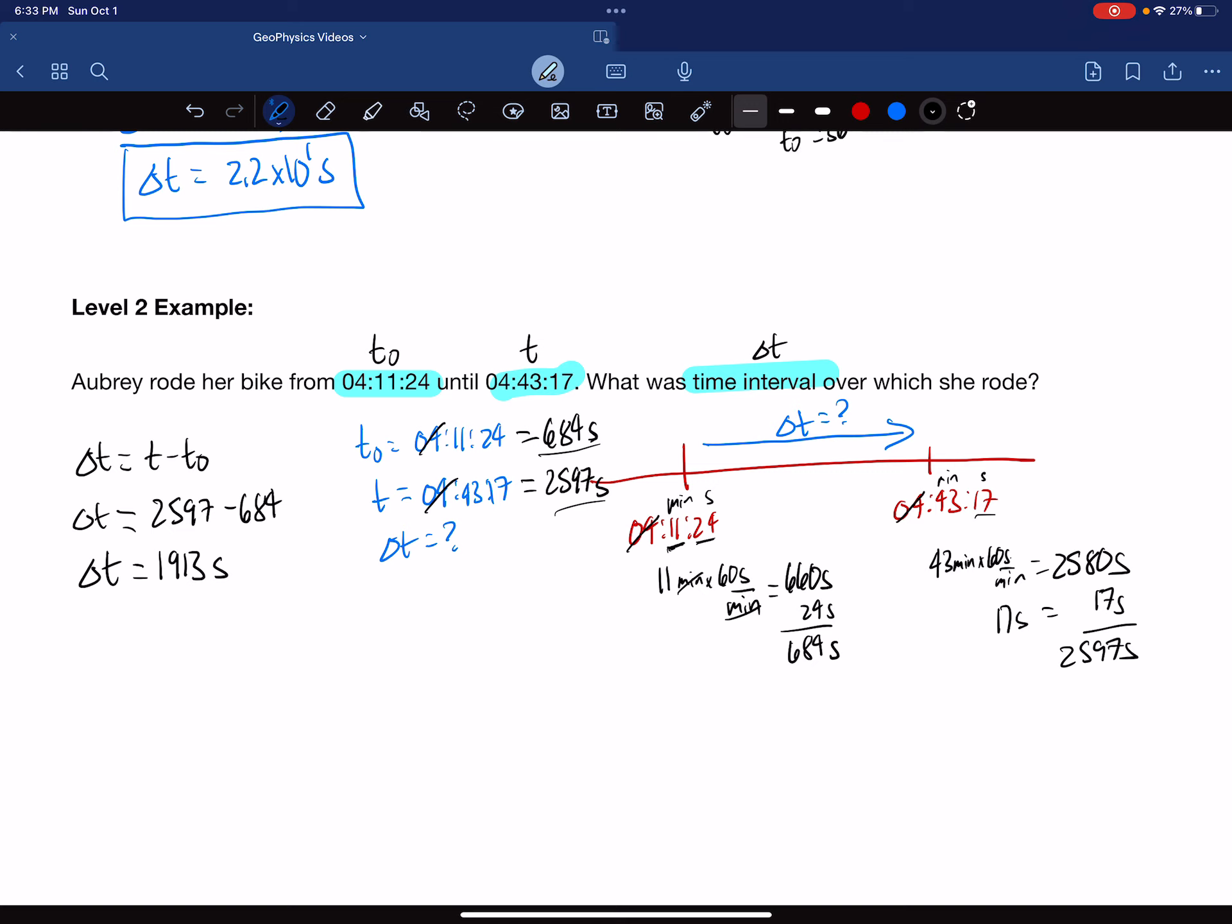We do need to express it in scientific notation. That is far more useful to us than putting it in minutes and seconds. We see the decimal place moves 1, 2, 3. Delta t then is 1.913 times 10 to the third seconds.